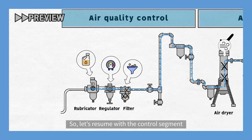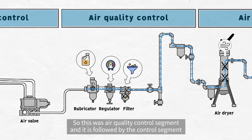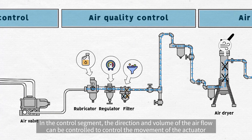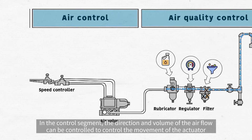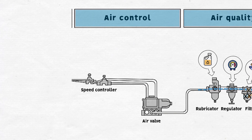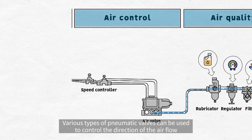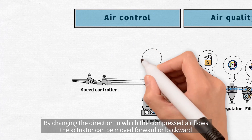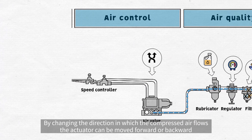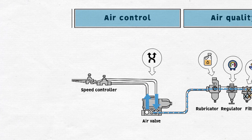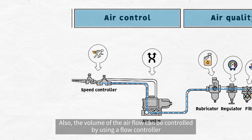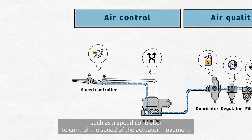So let's resume with the control segment. This was the air quality control segment, and it is followed by the control segment. In the control segment, the direction and volume of the airflow can be controlled to control the movement of the actuator. Various types of pneumatic valves can be used to control the direction of the airflow. By changing the direction in which the compressed air flows, the actuator can be moved forward or backward. Also, the volume of the airflow can be controlled by using a flow controller, such as a speed controller, to control the speed of the actuator movement.